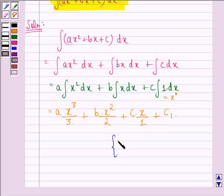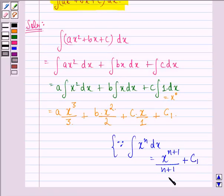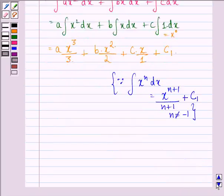Now this we do because we see that ∫x^n dx is given by x^(n+1)/(n+1) + C, where n is not equal to -1. So using this we get this.